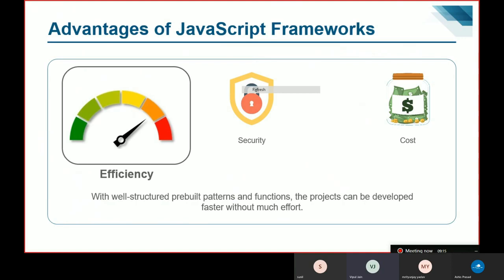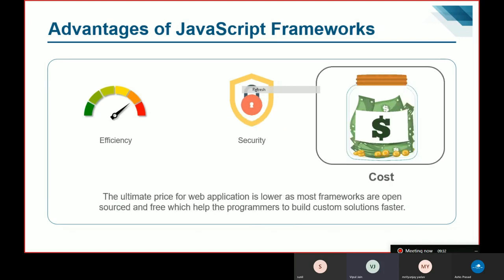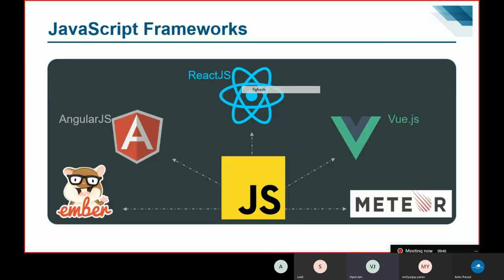JavaScript frameworks are very efficient, secure, and cost-effective. They have pre-built functions and patterns. Top JavaScript frameworks are generally supported by large communities, and users act as testers, making them more secure. The ultimate price of a web application is lower since most frameworks are open source and code is freely available. Some popular JavaScript frameworks include React.js, Angular, Amber, Meteor, Vue.js, and Knockout.js.